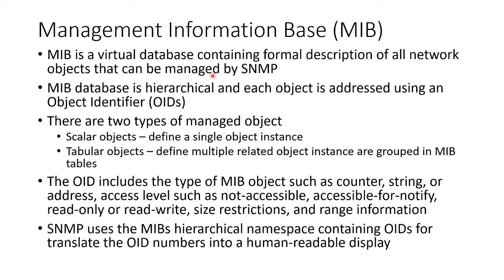The MIB is just a description of all the things that can be queried, and MIBs are organized in a hierarchical fashion — basically a long string of numbers with an associated question. In theory, you could organize every single MIB question in the whole world for every device into a single hierarchical tree structure. We can manage single objects like one router, called Scalar, or multiple things grouped together like a whole bunch of Cisco routers of the same model number. The MIB will have little object IDs — things like a counter, a string, an address, or some access level — so I can do reads and writes. SNMP uses the MIBs with all the little object IDs and translates them into something human readable.